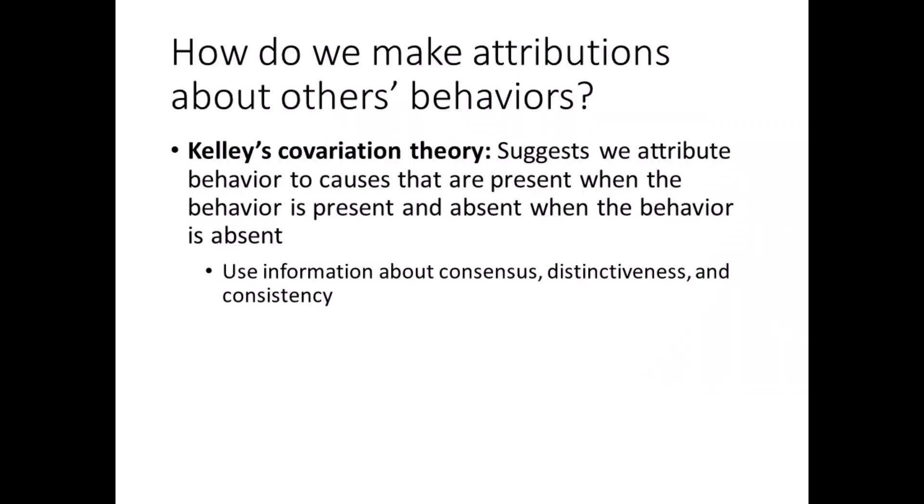Harold Kelley's covariation theory says we use data to draw conclusions about other people's behavior. More specifically, we rely on three factors — consensus, distinctiveness, and consistency — to make attributions. It suggests we attribute behavior to causes that are present when the behavior is present, and absent when the behavior is absent. This is called the covariation principle. For example, imagine a good student's poor grade truly is caused by an unexpected illness, not laziness. We notice that when the student is ill, their grades suffer, but when they are healthy, their grades do not suffer. Therefore, we conclude their poor grades are caused, in part, by illness.